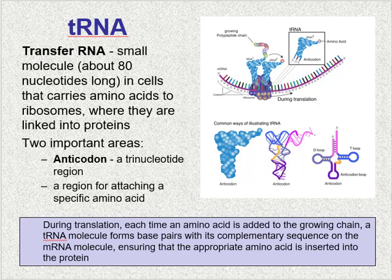There are two important regions of a tRNA to remember. The first is the anticodon — a trinucleotide region that corresponds to a complementary codon in the messenger RNA, syncing the tRNA and mRNA together. The other important region is a site for attaching a specific amino acid. So one end has the anticodon and the other end has the region for attaching an amino acid.